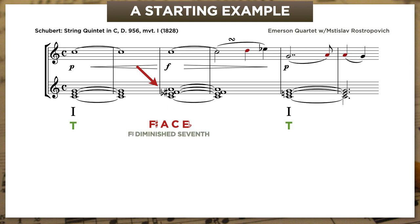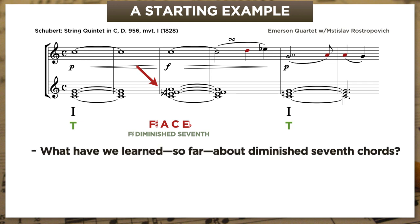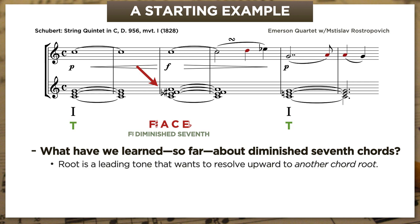Let's take a moment to think about what we've learned so far about fully diminished seventh chords. First, as far as we know, their root is always some kind of leading tone, and that leading tone wants to resolve upward to another chord root. This is true whether they're native to the key or acting as an applied dominant. And second, as far as we know, they always take the Roman numeral VII diminished seven.